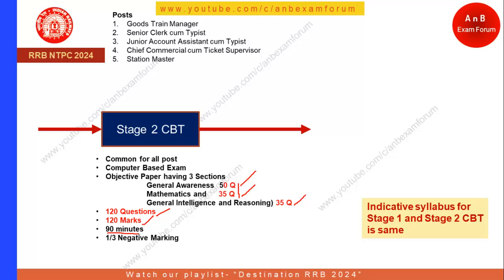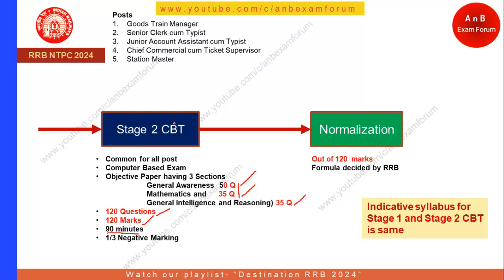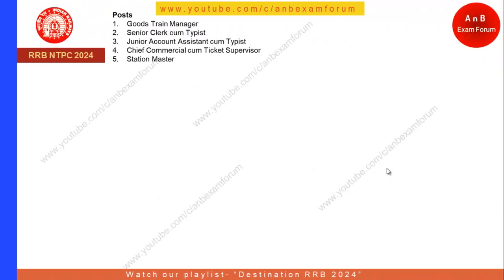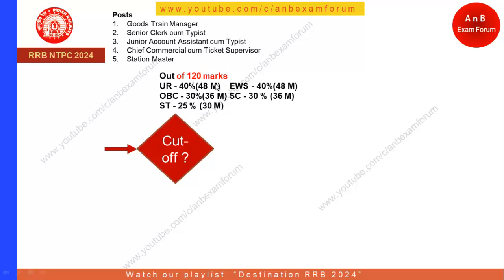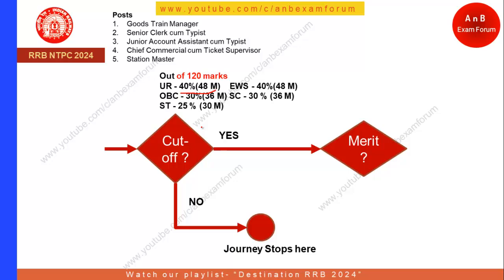Similar to Stage 1, there will be normalization for Stage 2, this time out of 120 marks, and the formula will be decided by RRB. The cutoffs for Stage 2 are also percentage-based out of 120 marks: Unreserved 40% (48 marks), and for ST category it is 30 marks. If you are not able to clear the cutoff, your journey stops there. If you clear the cutoff, a merit list will be made — this time they filter to 8 times the vacancies. So for 1,000 vacancies, 8,000 people will be called for the skill test.